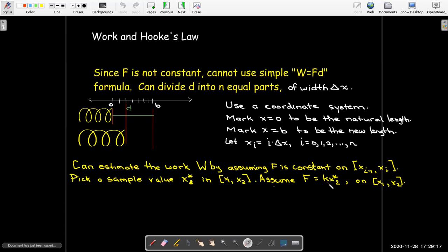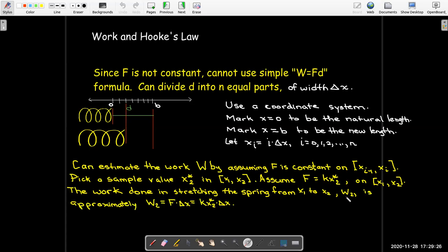And again, since I'm assuming a constant force, if I want to calculate the work done, I can just use the W equals F times d. So I'll call this work W sub 2. So it would be the force times the distance. And the force this time is k times x sub 2 star. The distance is the same. It's another delta x.